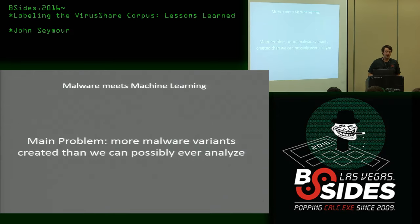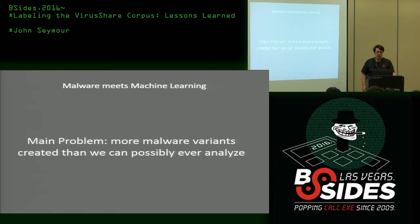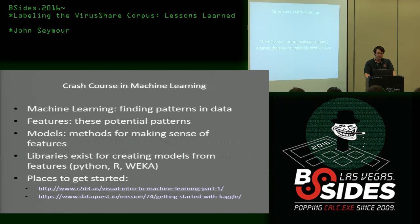The main problem is there's more malware variants created every day than we can possibly ever analyze. There's this thing called polymorphic malware, which basically means you run the malware and it changes its SHA-256 hash or whatever signatures are being used to classify these things. So we want to automate this process, and one thought is maybe we can apply machine learning to it.